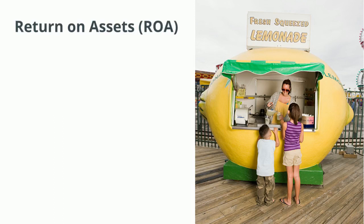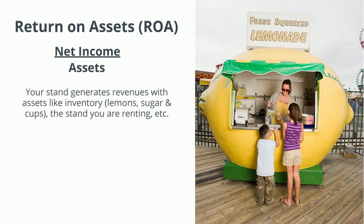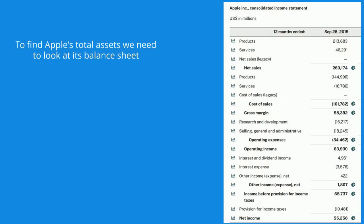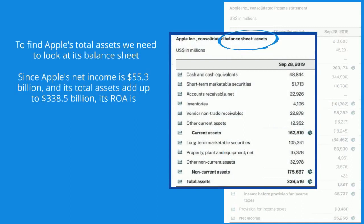Now let's look at return on assets — one of my favorite ratios because it's easy to eyeball on financial statements and tells you so much. It's measured as net income over assets. Your lemonade stand generates revenues with assets like inventory and the stand you're renting. If those assets add up to $275 and you generate $100 in net income, your ROA is 36.4%. Apple's total assets were $338.5 billion, so its ROA is about 16.3%.